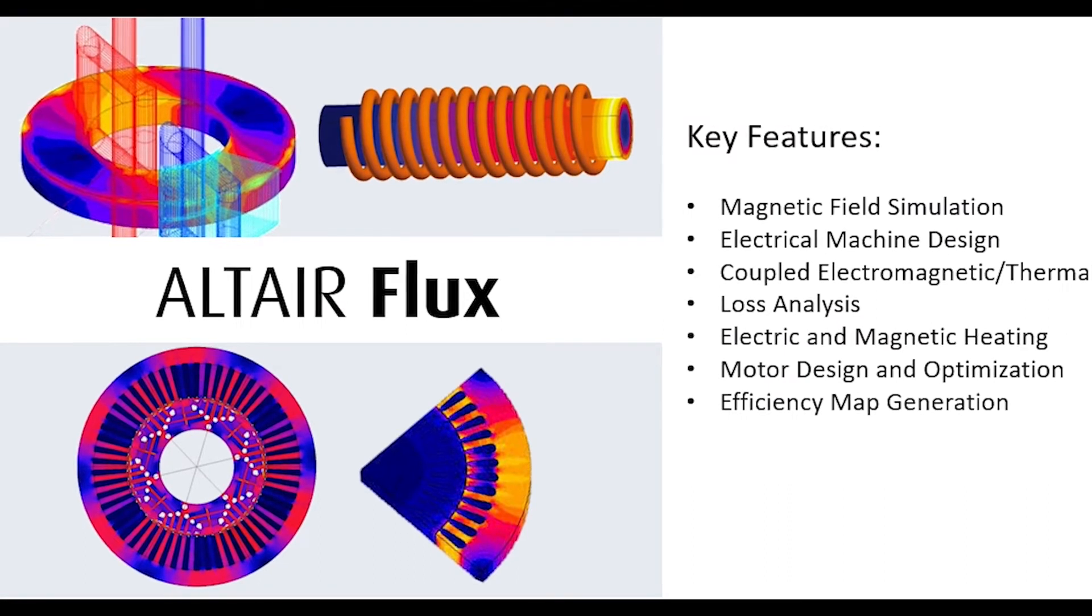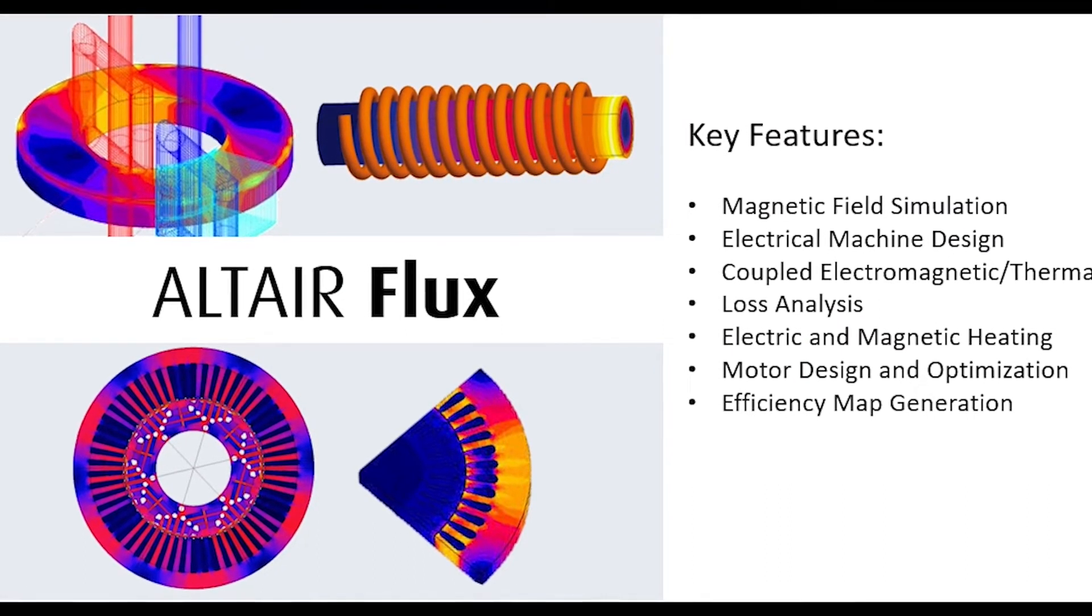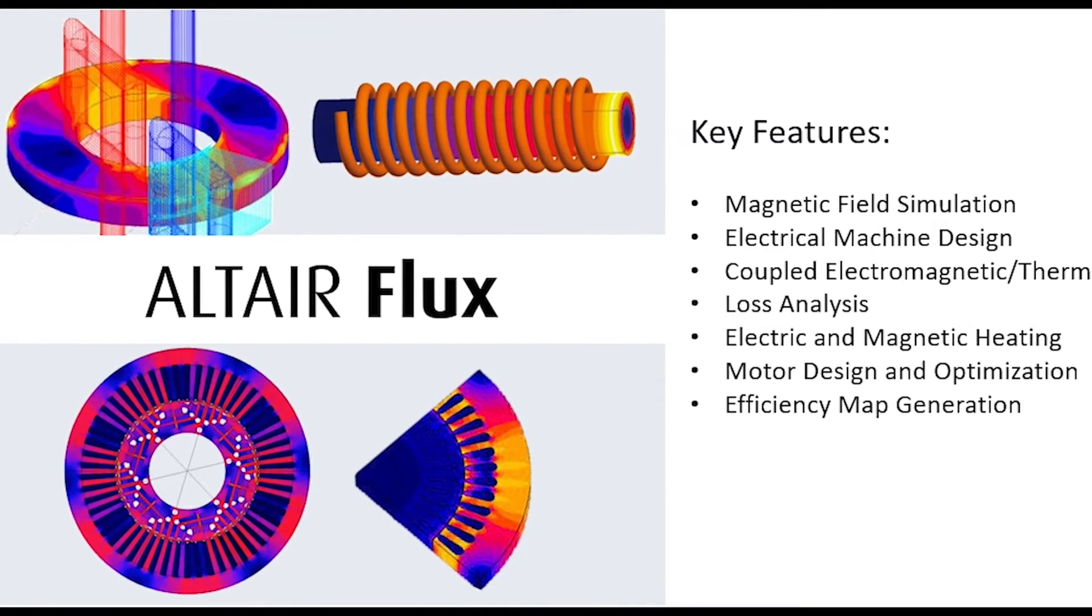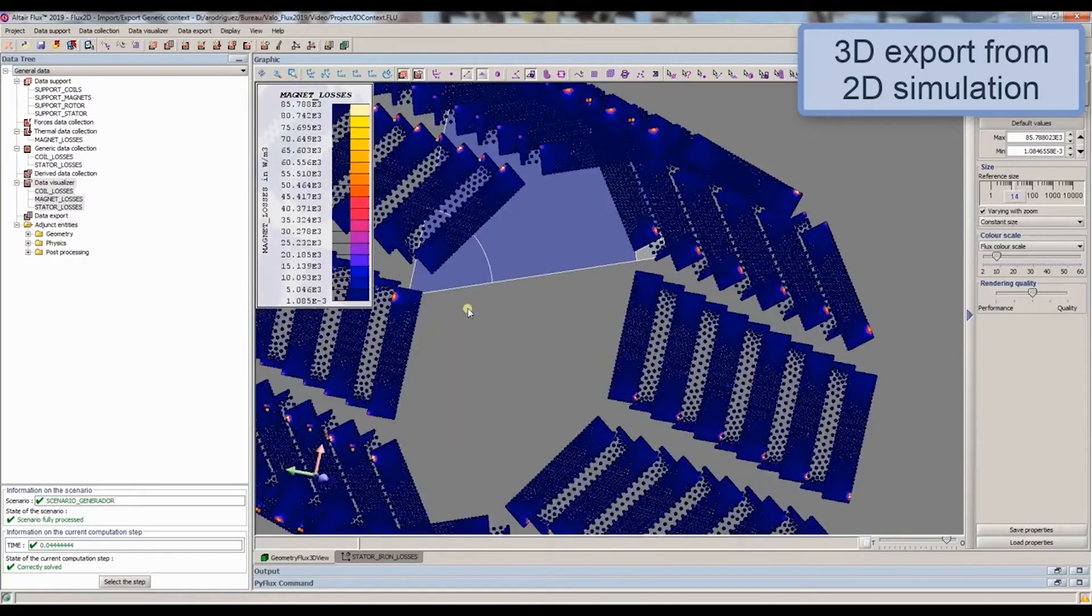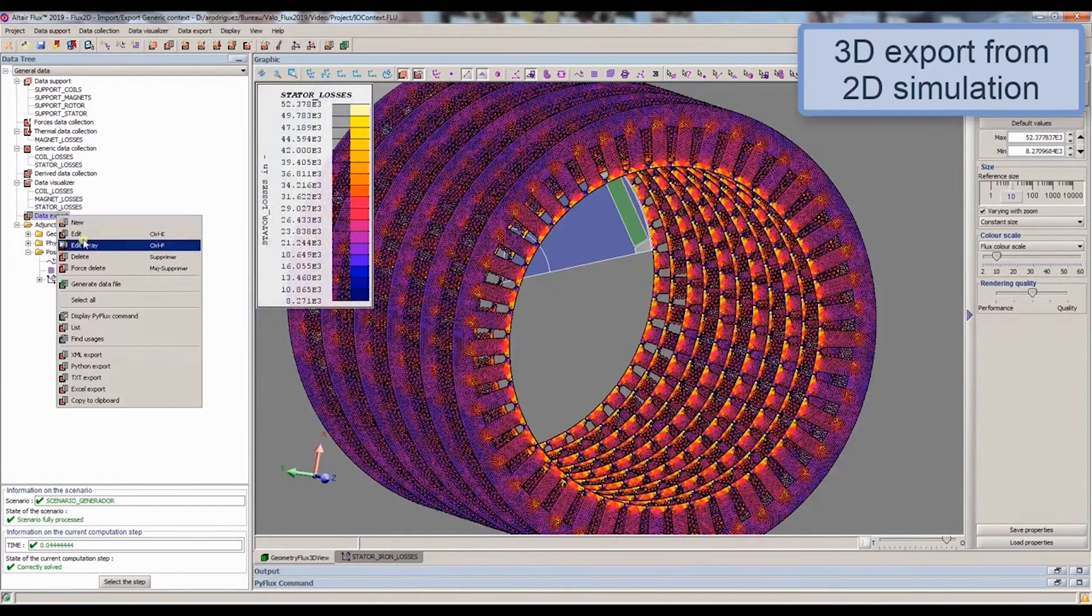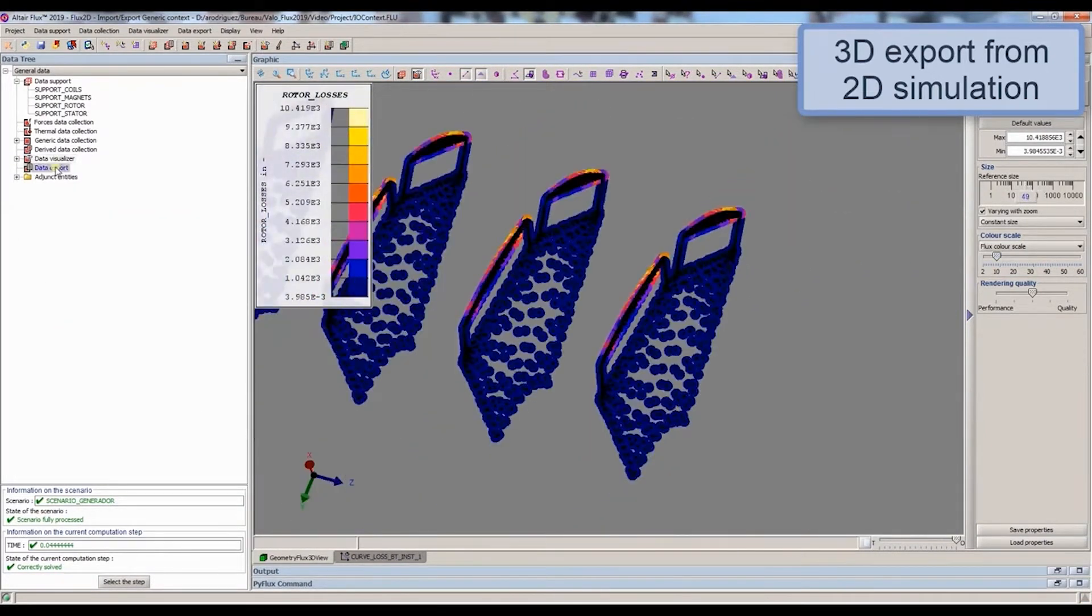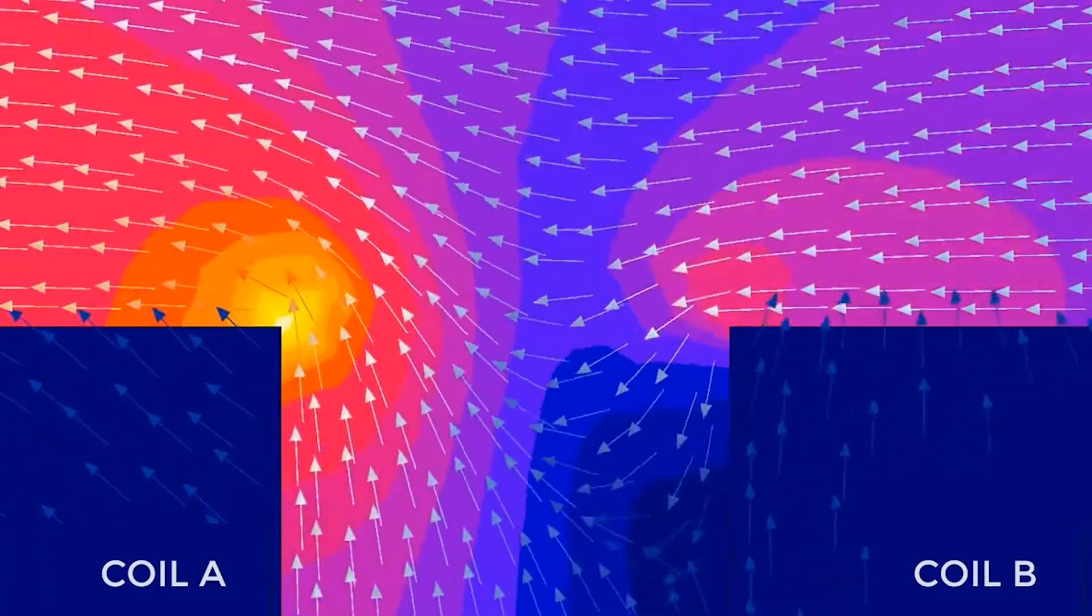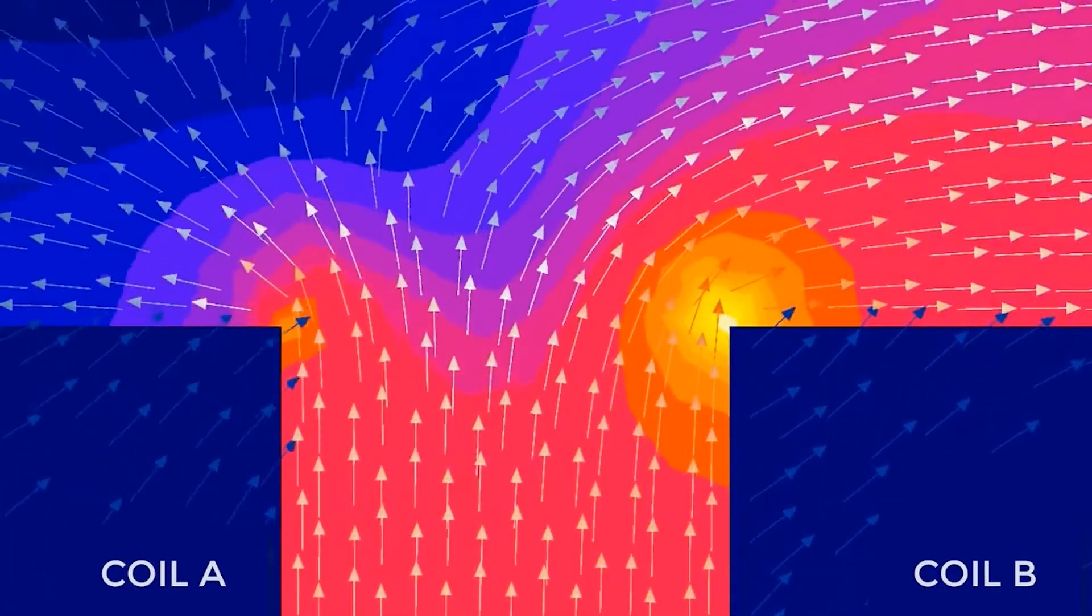Altair Flux and Flux Motor allows users to accurately analyze and optimize electromagnetic devices such as motors, generators, transformers and actuators. Its advanced simulation capabilities provide insights into electromagnetic fields, losses, thermal effects and more. The Flux Motor module specializes in motor design scenarios for performance prediction, initial sizing and reducing energy consumption.